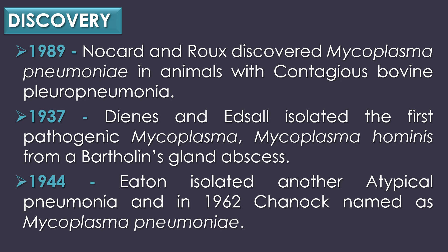Discovery: Mycoplasma pneumoniae was discovered by Nockard and Roths in 1898 in animals with contagious bovine pleuropneumonia. In 1937, Deans and Edsal isolated the first pathogenic mycoplasma, Mycoplasma hominis, from a Bartholin's gland abscess. In 1944, Eaton isolated another atypical pneumonia agent, and in 1962, Chanock named it Mycoplasma pneumoniae.